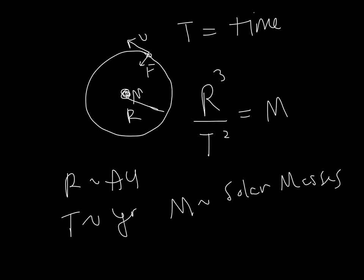So what that means is if I know the time and I know the mass, I can work out the radius, and if I know any two of these, I can get the other one. That's the second idea.